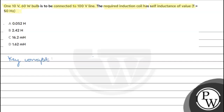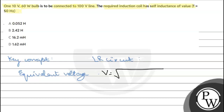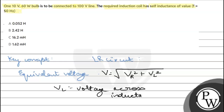The key concept is — जब हमारे पास कोई LR circuit होता है और हमें उसका equivalent voltage निकालना हो, तो उसका formula होता है: V (equivalent voltage) = √(Vr² + VL²), where VL is voltage across inductance and Vr is voltage across resistance.